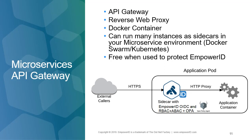The gateway will contact EmpowerID or another policy decision point to determine if the user is permitted to do the actions or access the pages they're trying to access at this moment in time, in this context, from this device, this IP, with this authentication level. It will block requests that are not allowed, and allow and log requests that are permitted.